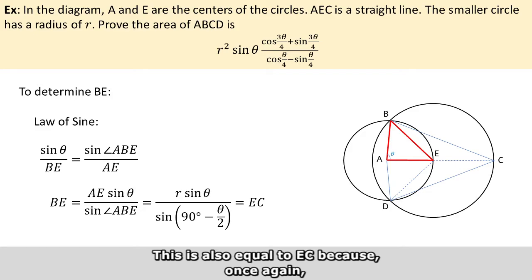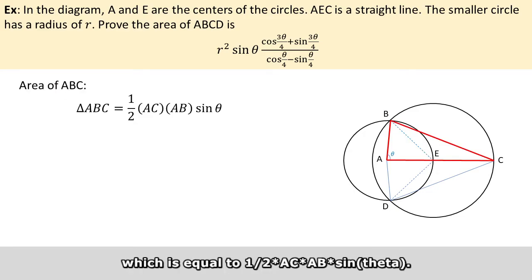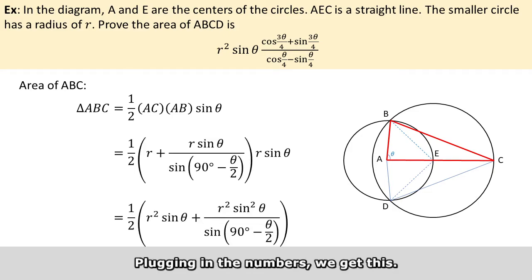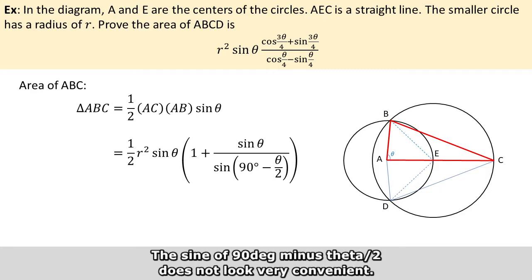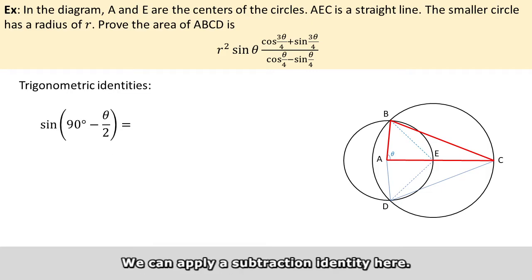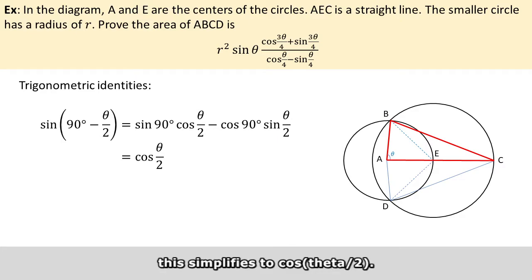This is also equal to EC because both BE and EC are the radius of the larger circle. Now we can compute the area of triangle ABC, which will be equal to half times AC times AB times sine of theta. Plugging in the numbers, we get this expression. We can simplify a little by factoring out R squared times sine of theta.